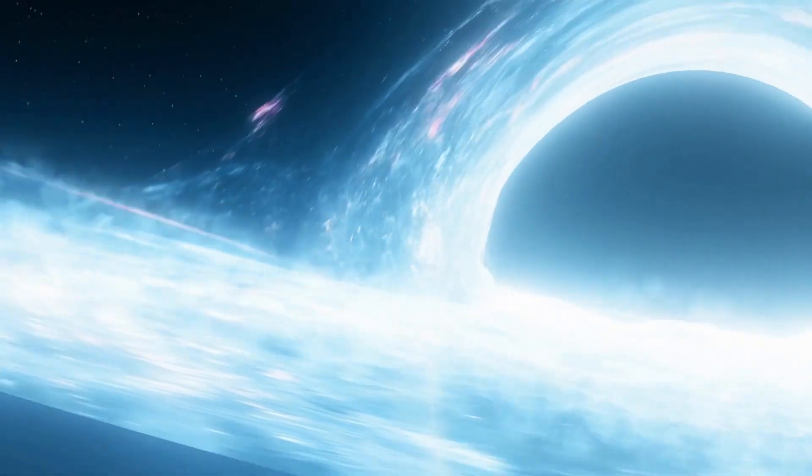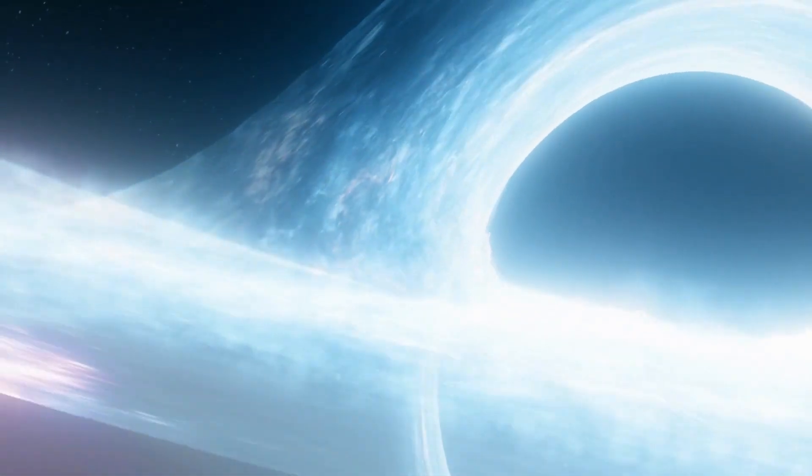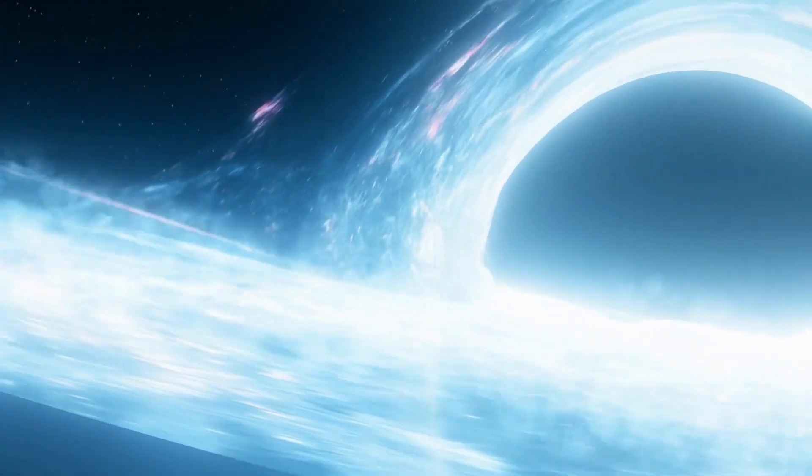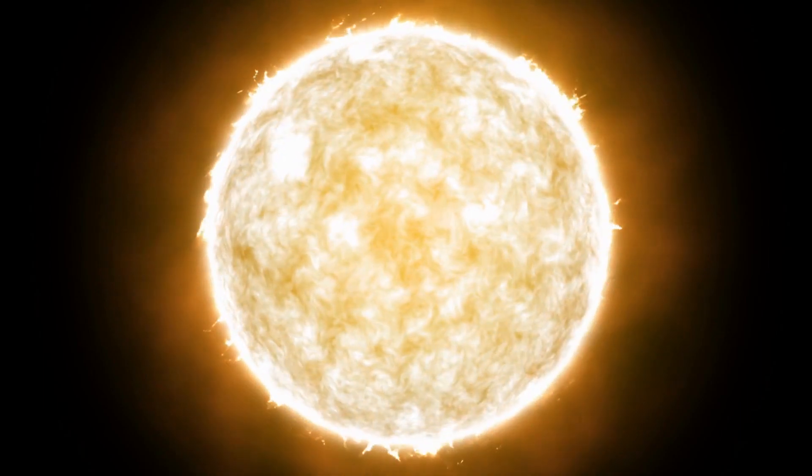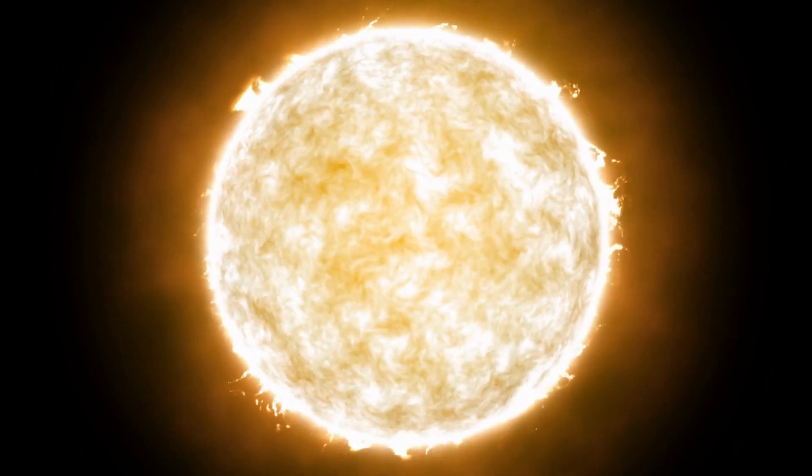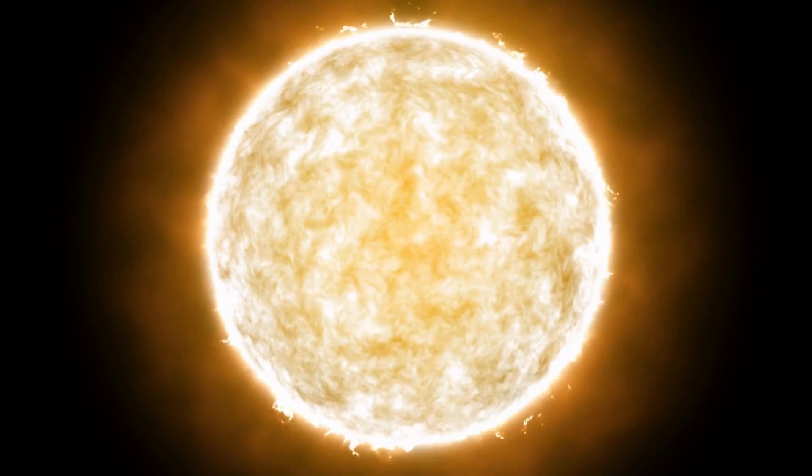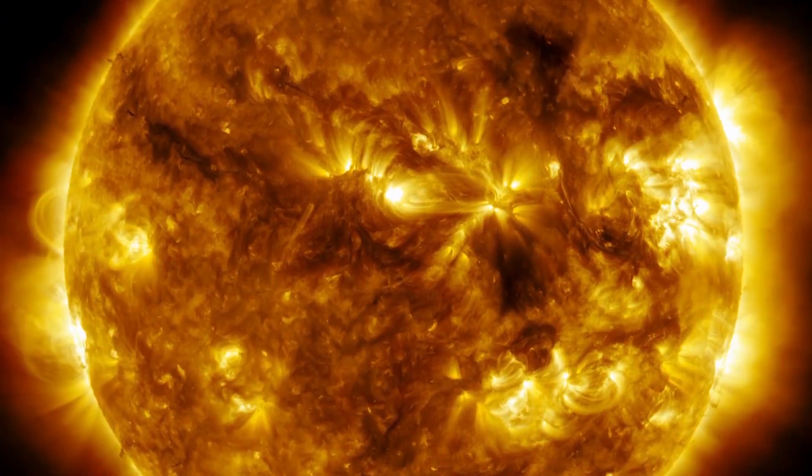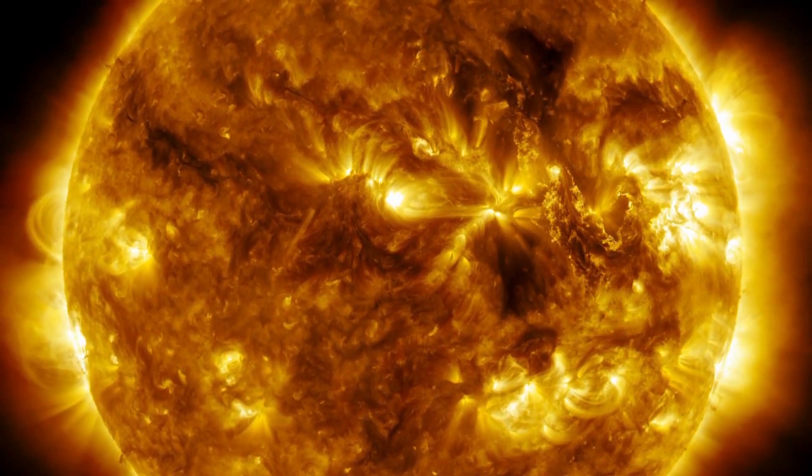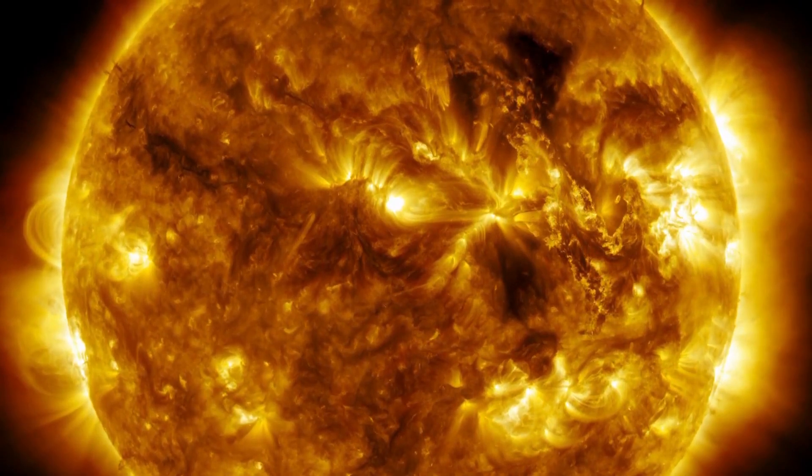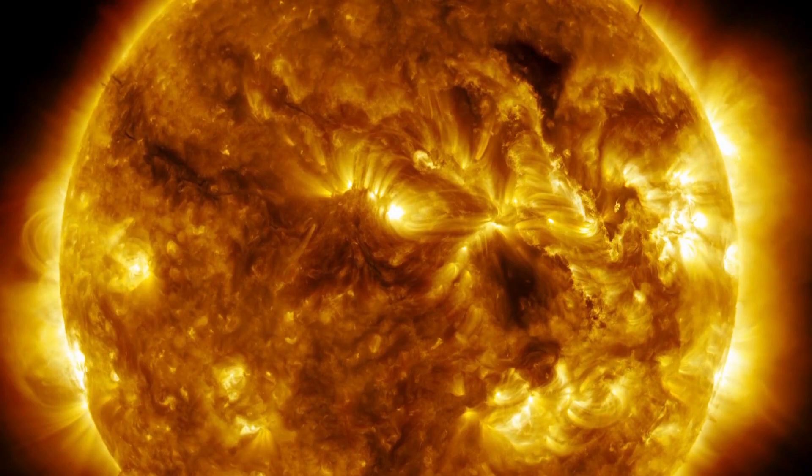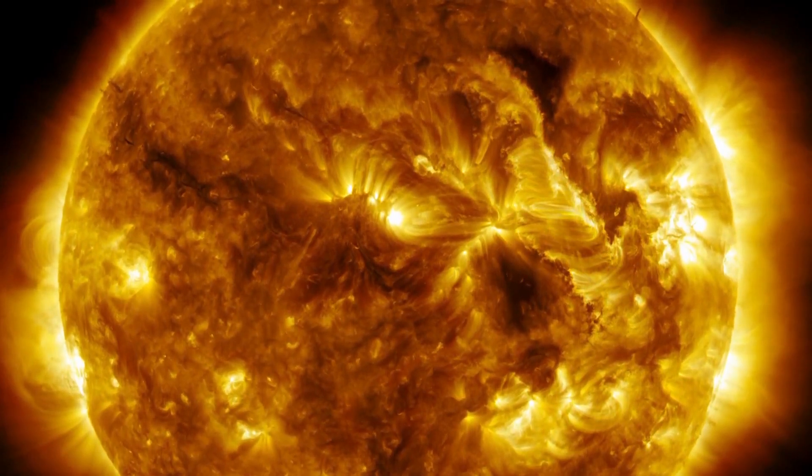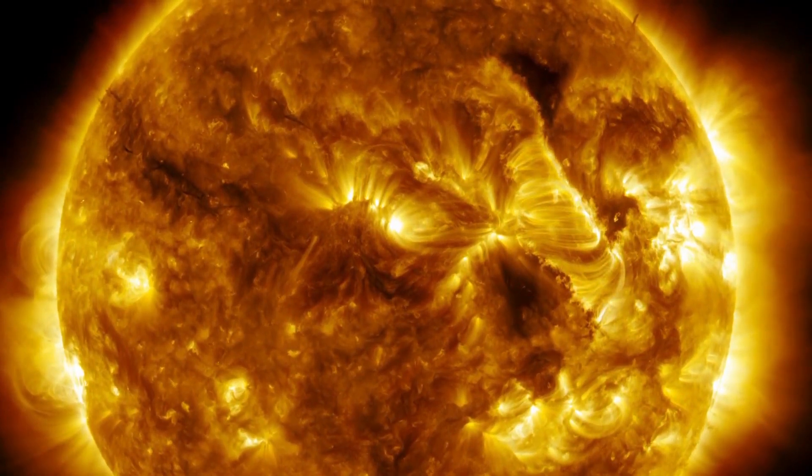To understand how black holes formed and what happens inside them, it is necessary to go back to the life cycle of a massive star. These massive stars are true cosmic powerhouses fueled by the incredible nuclear fusion reactions that take place in their cores. The sun's energy source comes from the fusion of hydrogen and helium. During this process, two hydrogen atoms combine in a collision and form a helium atom. As long as the star has enough hydrogen to carry out the fusion, it can maintain its brightness.